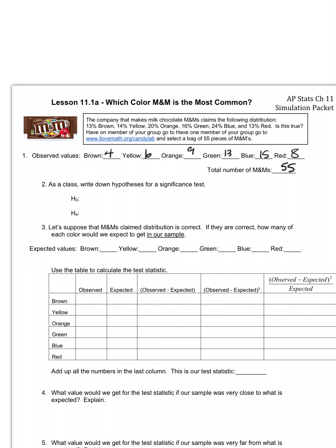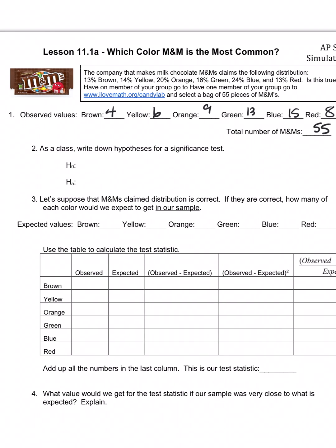We're interested in the color distribution, right? So we would say the claimed color distribution of M&Ms is true, because I don't want to write all that out. So I'm just gonna say the claimed color distribution for these M&Ms is true. So the null is the equal.